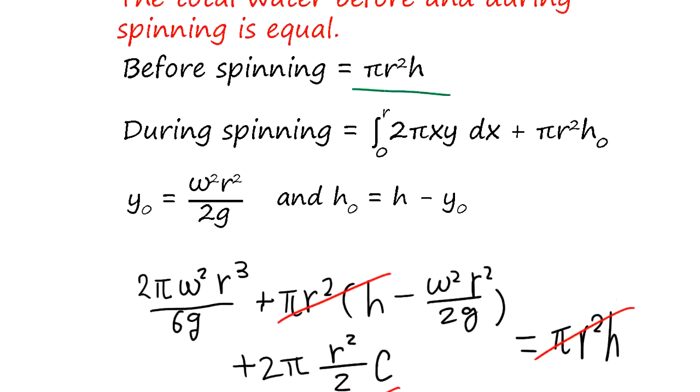So before spinning, we had this volume, the cylinder volume. And during spinning,